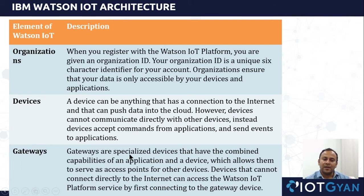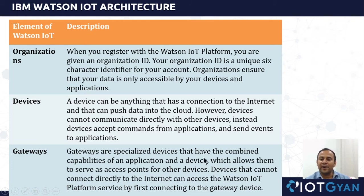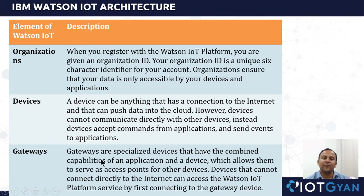Next is the gateway. Gateways are basically devices that have the combined capability of both an application and a device. A gateway can support 50 or hundreds of nodes — all these nodes send their data to the gateway, and the gateway in turn sends the same information to the cloud. This reduces the burden on the cloud, since it deals with only one gateway rather than hundreds of nodes. Devices that cannot directly connect to the internet can access Watson IoT by first connecting to the gateway.